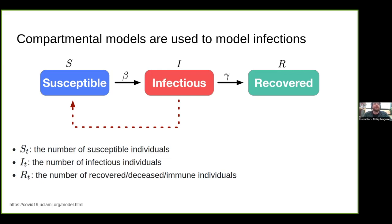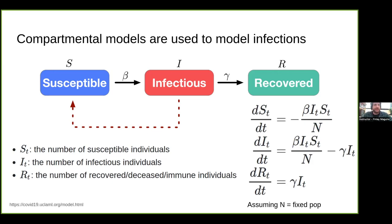S(T) is the number of susceptible individuals at a given time point T. We use a system of differential equations to model the transitions and rate of change between these population groups over time. The derivative of susceptibles per time is a function of gamma, the infectious group, the susceptible population, divided by N (total population size), assuming a fixed population. That's the standard epi tool for infectious disease modeling.